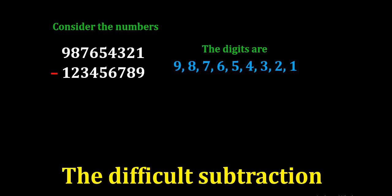Same as the previous number. If we subtract these two numbers, we get the answer as 864197532.